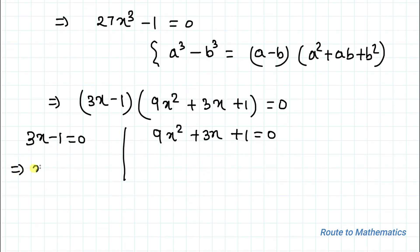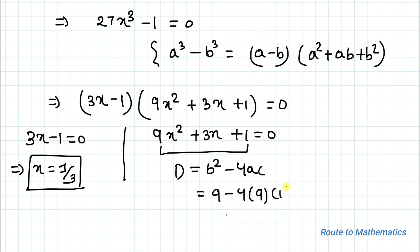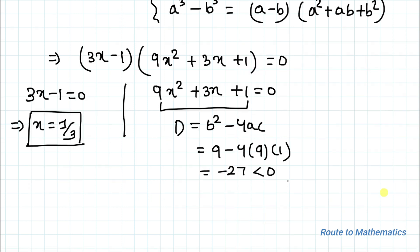From the first factor we directly get x equals 1/3. For the quadratic equation 9x² + 3x + 1 = 0, let's take the discriminant value b² minus 4ac. Here b² is 3² = 9, minus 4 multiplied with 9 multiplied with 1, which equals minus 27, which is less than 0. If the discriminant is less than 0, the solutions are imaginary and must be discarded.